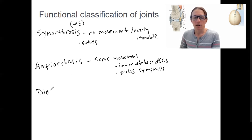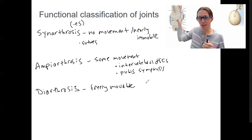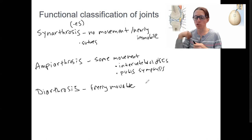Then we've got diarthrosis. These are freely movable. Very mobile. And there's going to be a couple of different types of ways they can move in different planes. So uniaxial is a hinge joint. Biaxial means movement in two planes. And then multiaxial is like this. So multiple planes of movement.